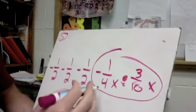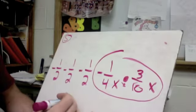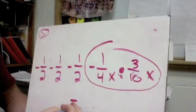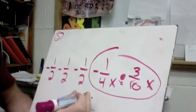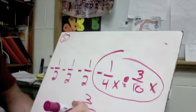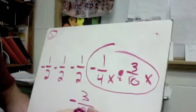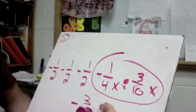So if I do negative 1 fourth, it's going to be times a positive, so I know it's going to be negative. Straight across with multiplication, 1 times 3 is just 3. 4 times 10 is going to be 40. And then we're timesing two x's together, so that would be just x to the second power.